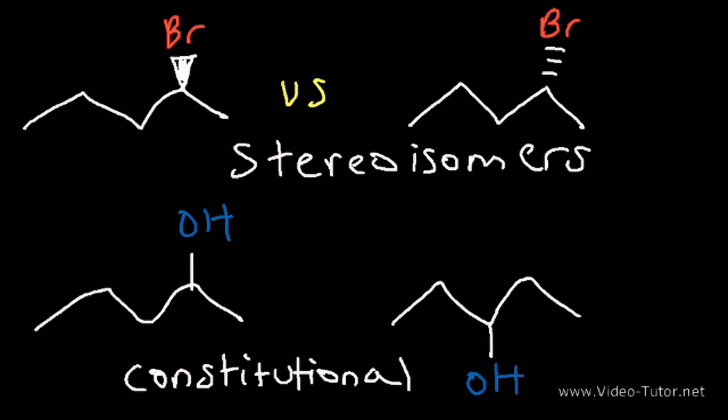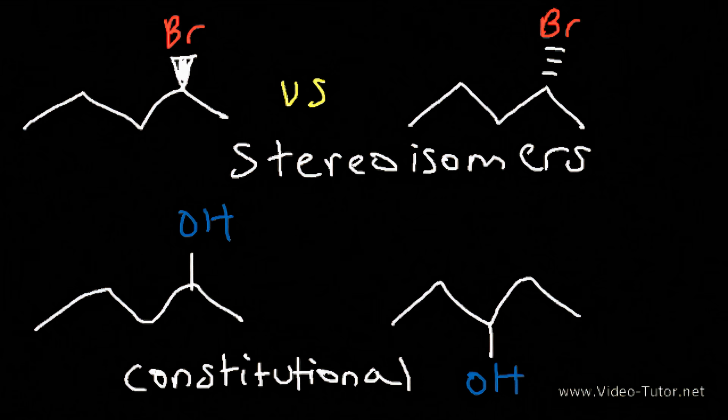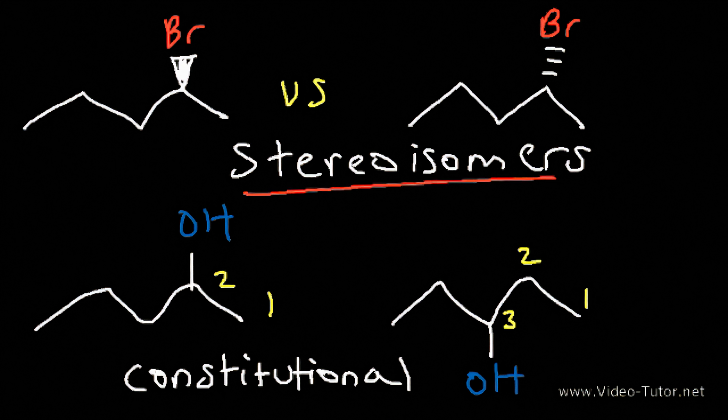Constitutional isomers differ in their connectivity. The alcohol in the first molecule is attached to carbon 2; in the second molecule, it's attached to carbon 3. So constitutional isomers are connected differently, whereas stereoisomers are connected the same way.